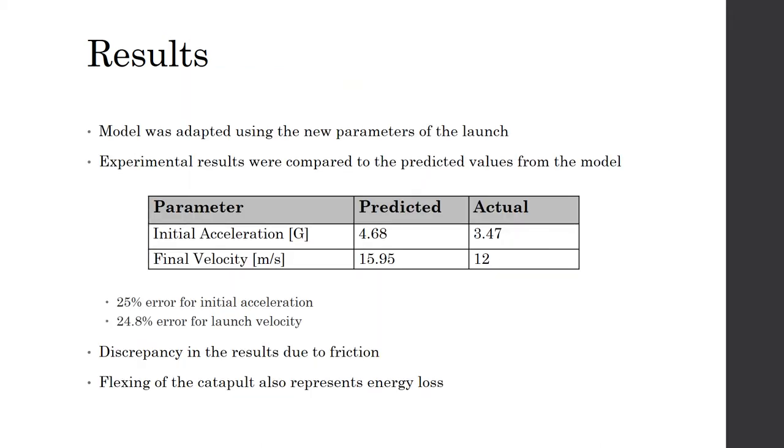The model was adapted to use the new parameters of the launch, namely 3 bungees instead of the 7. The experimental results were then compared to the predicted values from the mathematical model. A 25% error for initial acceleration and 24.8% error for launch velocity are observed.